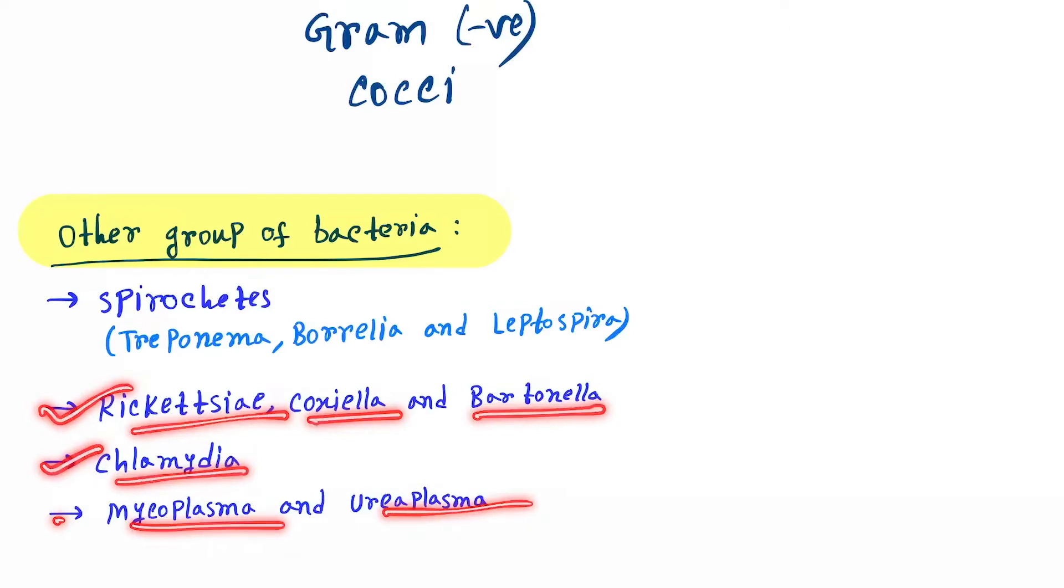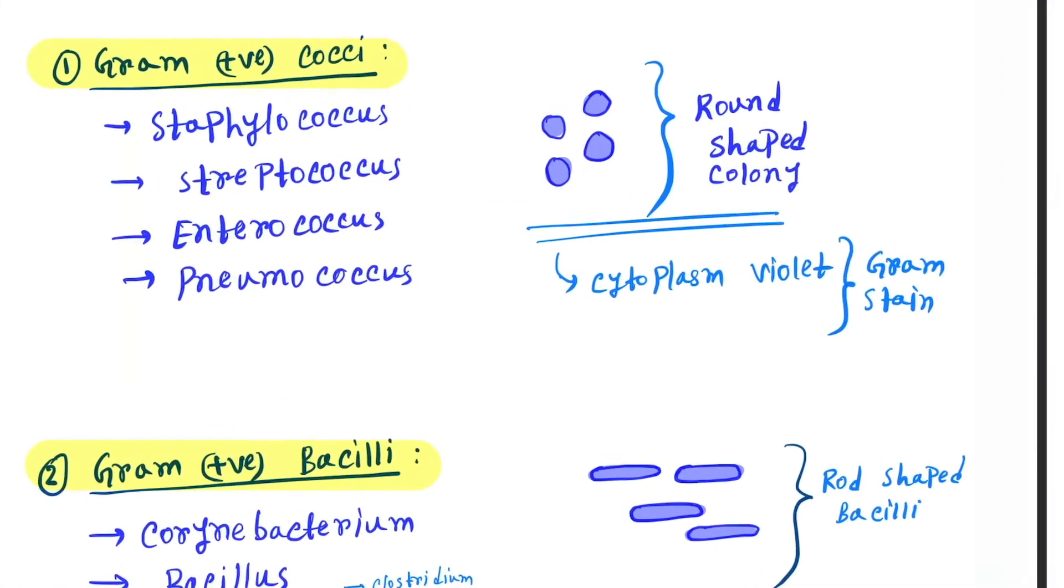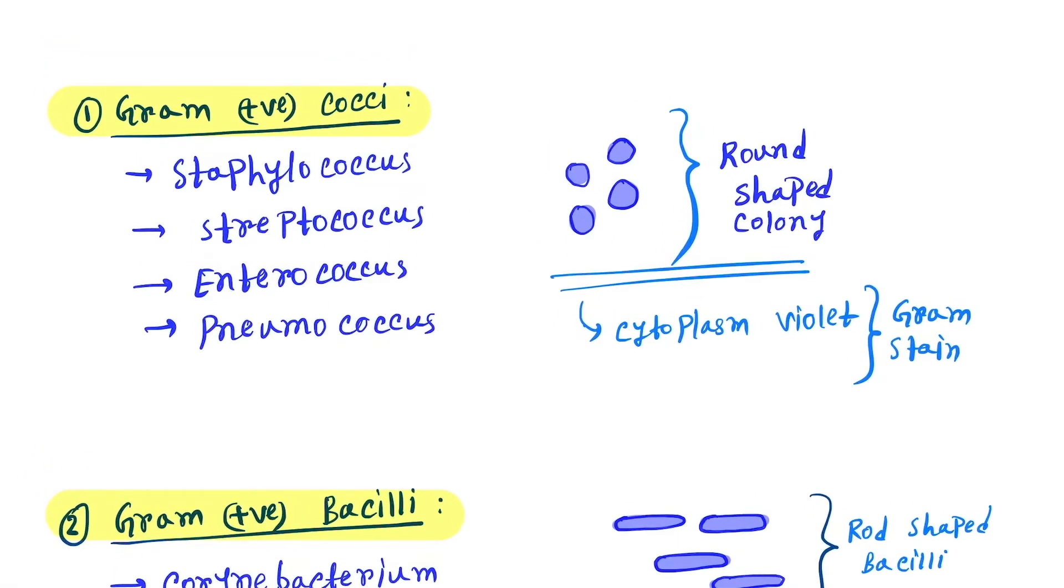Let's start with gram positive cocci. Gram positive cocci will look violet in color, the cytoplasm will look violet in gram staining. Examples are Staphylococcus, Streptococcus, Enterococcus, and Pneumococcus.